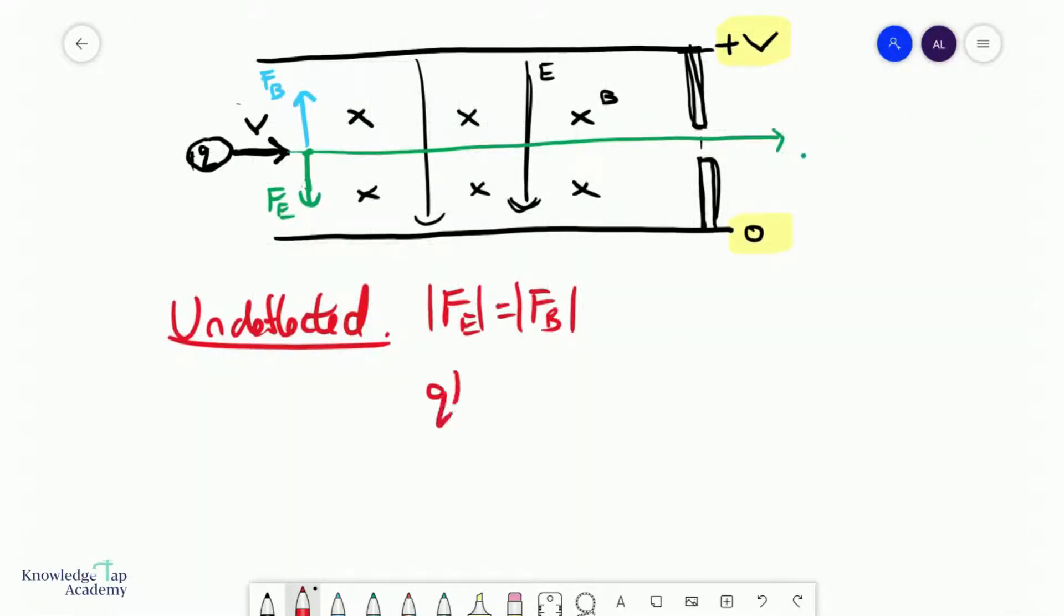And we know that the magnetic force is Bqv. Canceling the q's, we have v equals E over B, where v is what you can think of as the selected velocity.